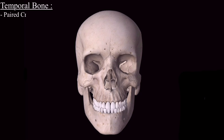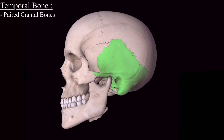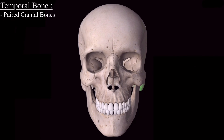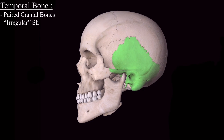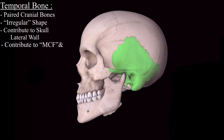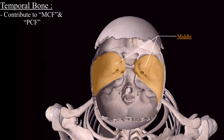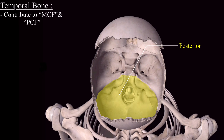Temporal bones are paired cranial bones — this is one temporal bone and this is the other temporal bone. They are irregular in shape, forming the lateral wall of the skull. The temporal bone also has contribution in both the middle cranial fossa and the posterior cranial fossa.